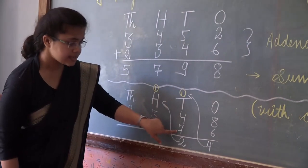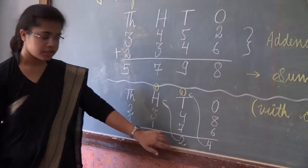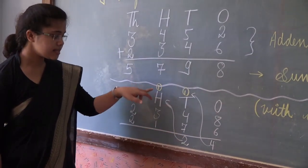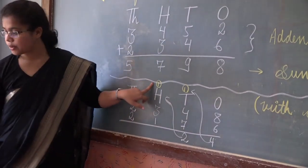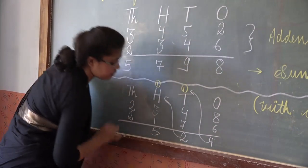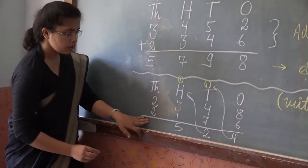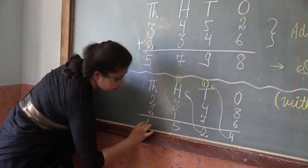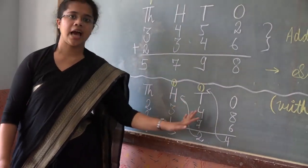Now 4 plus 7 plus 1 is 12. We will write 2 here and 1 is carry to 100 space. 3 plus 1 is 4, plus 1 is 5. So we will write 5 here. Nothing is left. We don't need to carry anything. So 2 plus 2 is 4. This one is addition with carry over.